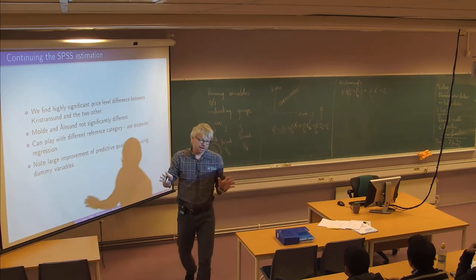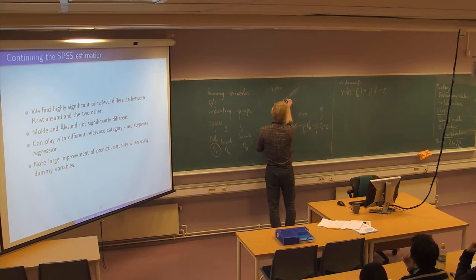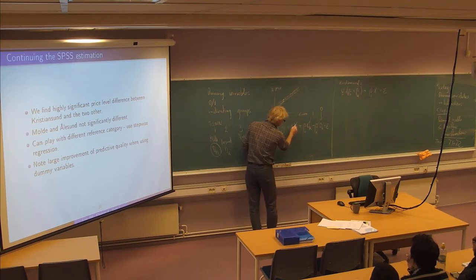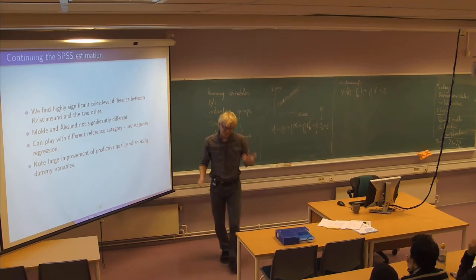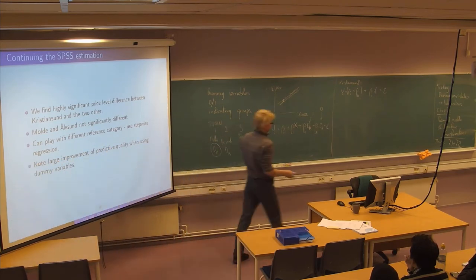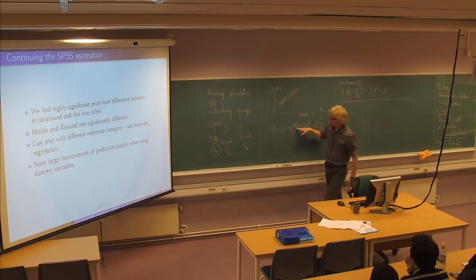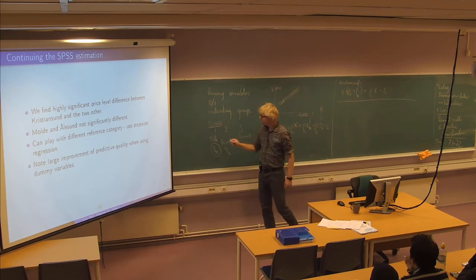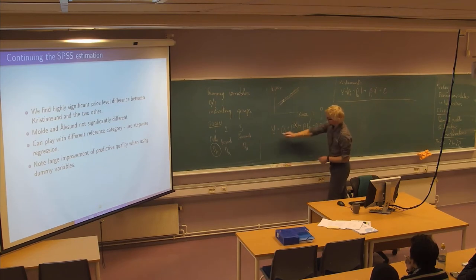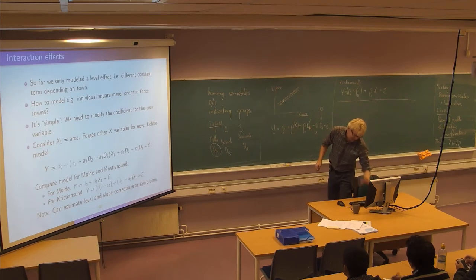So this is how it works when we just want to model shifts in the level here. So let's take just a little moment to do something that is slightly more complicated. Suppose we suspect that not only the constant levels here, but also maybe the slopes. So it means maybe the effect of the area is different in the three towns. In daily life talk, you would say the square meter price is different in the three markets, which is not unreasonable. But we would need to check that. And then we are talking about an interaction effect between the x variable and this town variable. So the value of the town or the belonging in the town affects how this x variable works on the price. That's what we call an interaction effect.